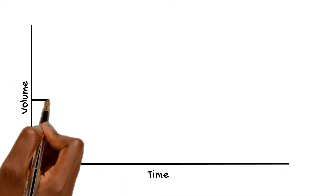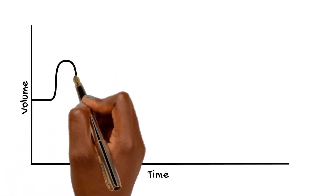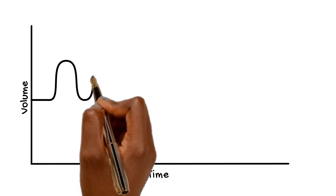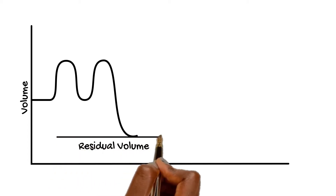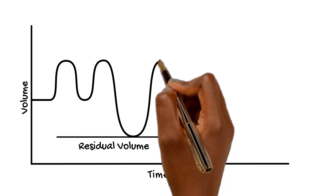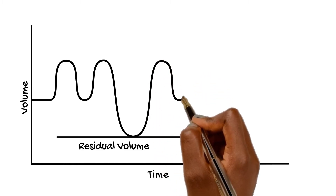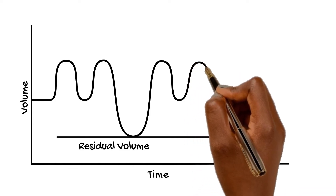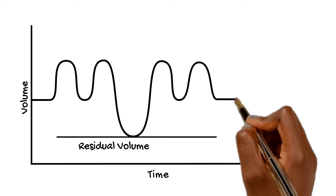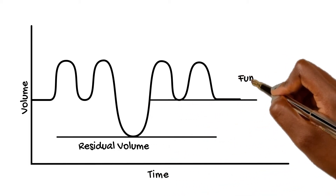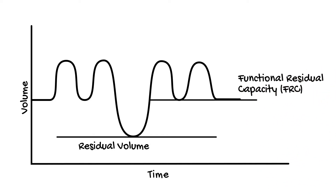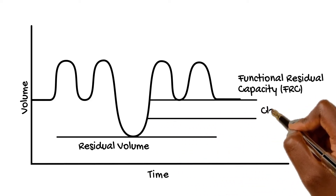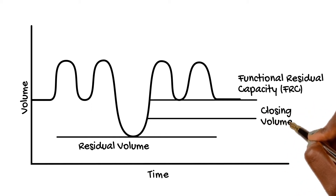If we consider somebody breathing in and generating their tidal volume and then breathing out — on the next breath if they breathe all the way out as far as they can, this will take us down to their residual volume. The lungs haven't completely emptied and there's still some air left inside. Moving back up to tidal volume breaths, functional residual capacity sits at this level — the amount of air somebody's breathing on top of. Closing volume sits between functional residual capacity and residual volume, and this is the point where when the lungs go below that level the airways start to collapse.